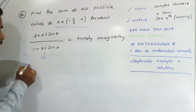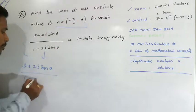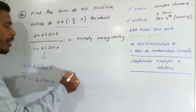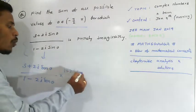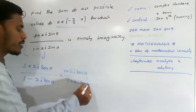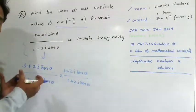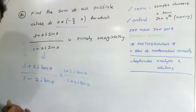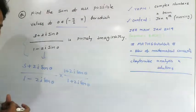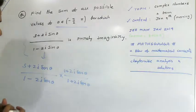So (3 + 2i sinθ) / (1 - 2i sinθ) multiplied by (1 + 2i sinθ) / (1 + 2i sinθ). The denominator is of the format (x - iy)(x + iy), which equals x² + y².